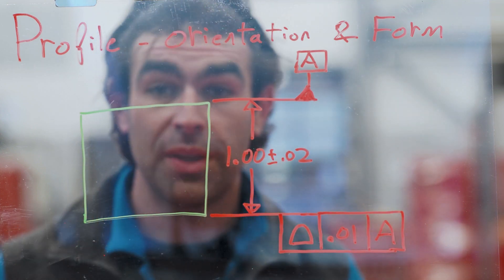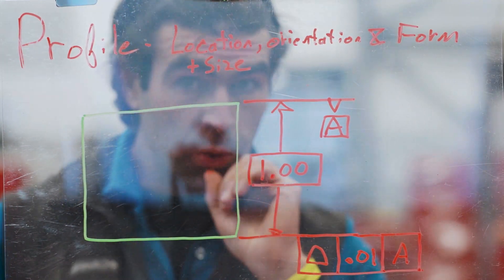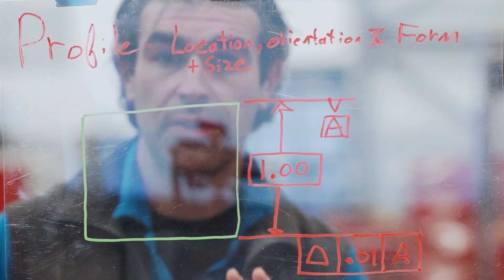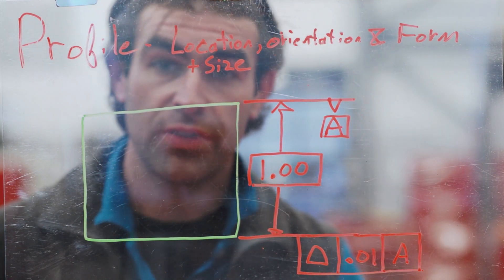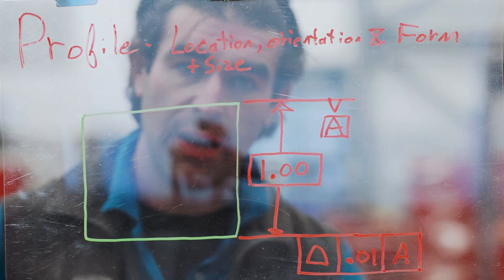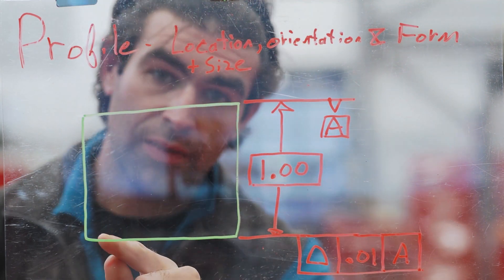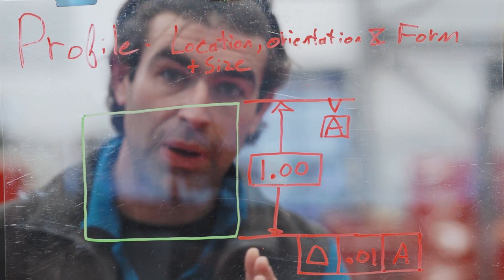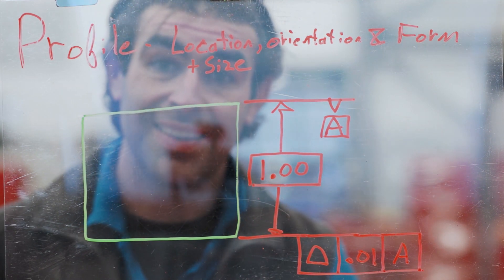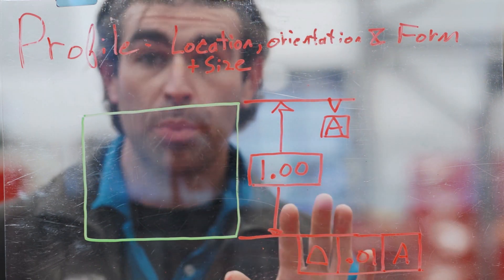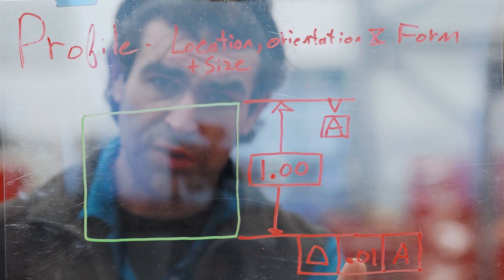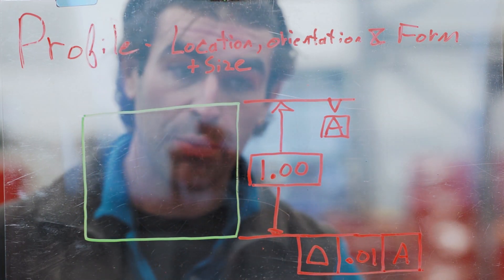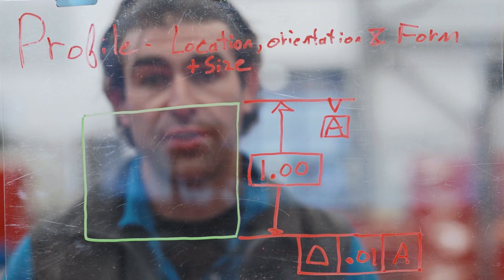If this is a basic dimension instead, we have something else going on. In this example, there's no plus or minus dimension, so we need to locate this surface to datum A using a basic dimension of one inch. The true profile is that line one inch from A, and the 10 thou is centered on that true profile — the surface of the part must be within that 10 thou zone. This has far less tolerance than the previous plus-or-minus version. It controls the location of the surface relative to A, the parallelism relative to A, and the form simultaneously.